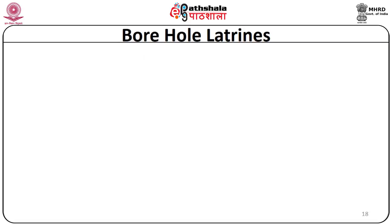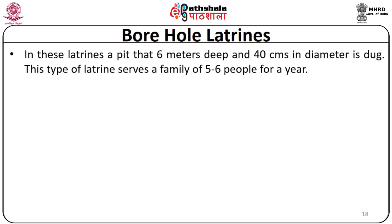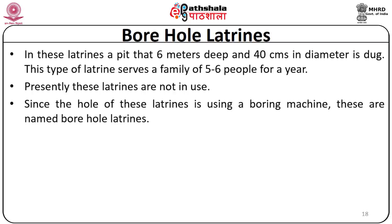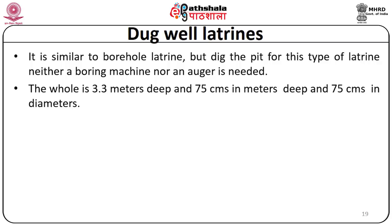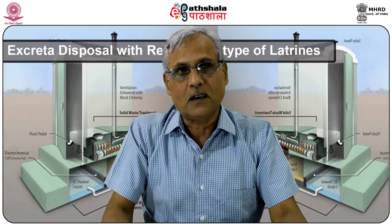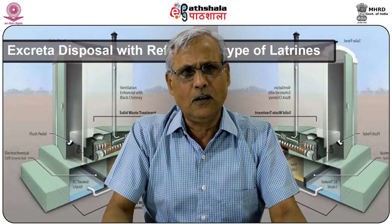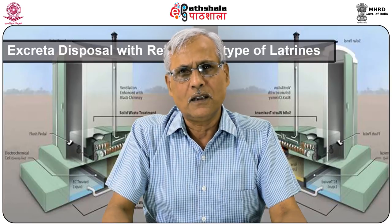In borehole latrines, a pit about 6 meters deep and 40 centimeters in diameter is dug. This type of latrine serves a family of 5 to 6 people for a year. Presently, these latrines are not in use, since the hole is dug using a boring machine. A modification is the dug well latrine, where neither a boring machine nor an auger is needed. This pit is 3.3 meters deep and 75 centimeters in diameter. A concrete plate is placed on it for the user to sit on, and a small family can use it for many years before the pit is closed.